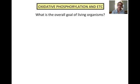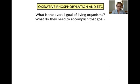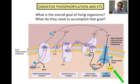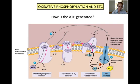What is the overall goal of living organisms? The overall goal of living organisms is to stay alive for long enough to reproduce and pass on their genes. In order to stay alive, they need energy, which we already discussed comes from ATP. The ATP is generated as hydrogen ions move through ATP synthase, the enzyme that catalyzes the reaction that phosphorylates ADP.